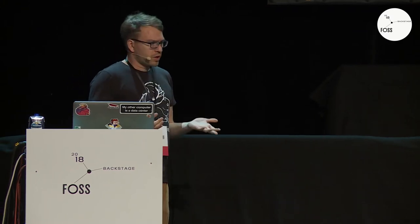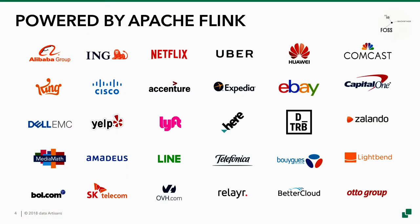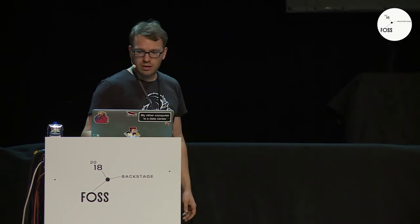It runs on clusters of various sizes, so you can run it on a single machine, or you can also deploy it on clusters up to a couple of thousands of machines. It has a very active and helpful community. Common use cases for Flink include typical stream processing applications like fraud detection, anomaly detection, real-time analytics, machine learning, or just crunching data in a streaming fashion in general. The software is used by many companies across various industries such as telcos, retail, and typical tech companies.